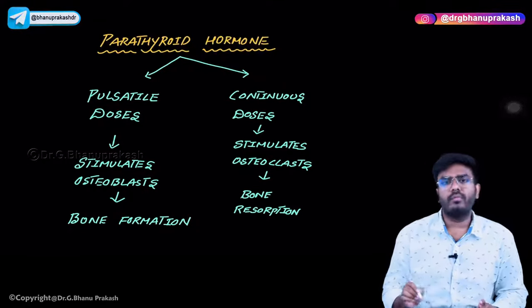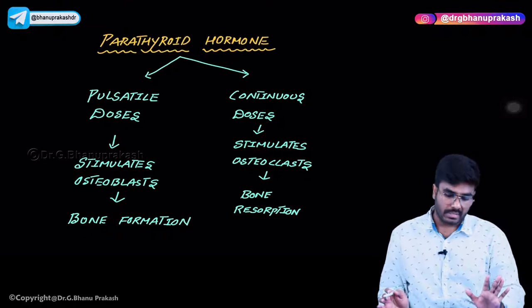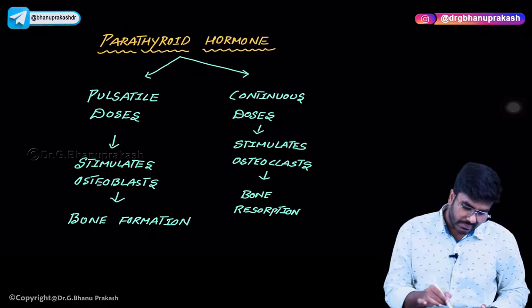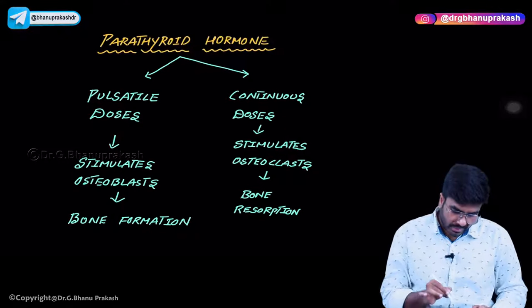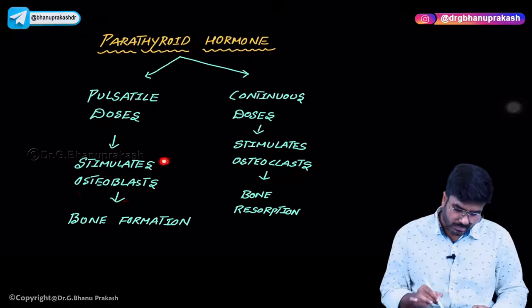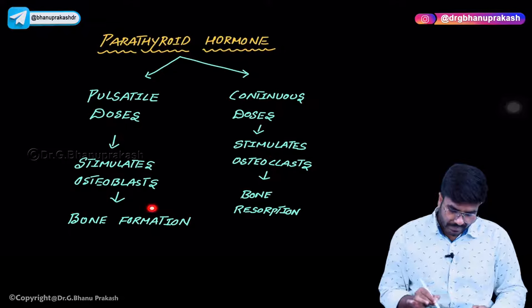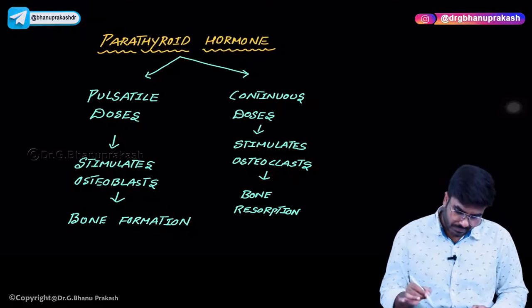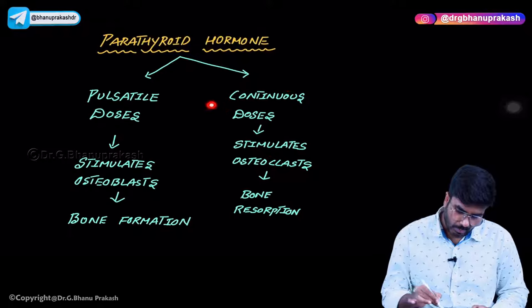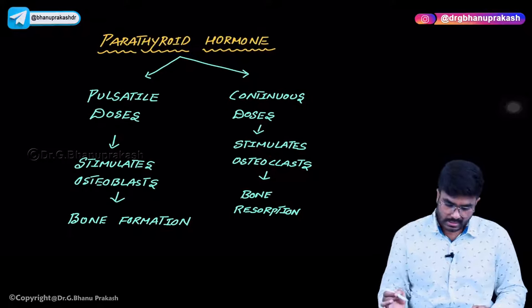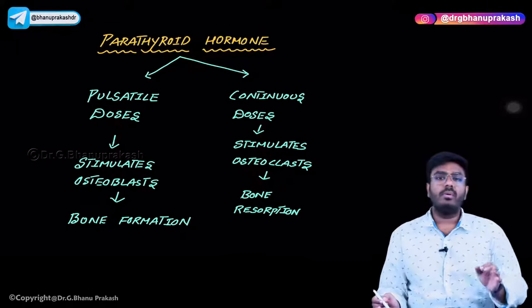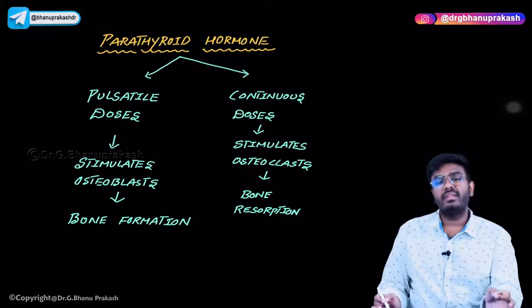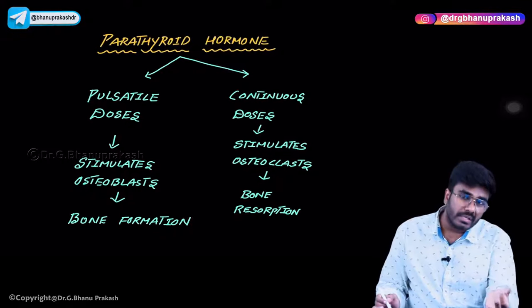Wherever you see parathyroid hormone, it increases blood calcium levels. When PTH is released in pulsatile doses at regular intervals, that pulsatile dose stimulates osteoblasts and helps in bone formation. But whenever PTH is present in continuous doses, it stimulates osteoclasts, which causes bone resorption.